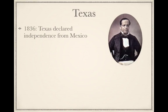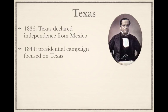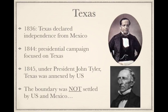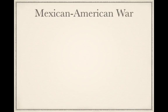Texas will break away from Mexico under Santa Ana's leadership. In 1836, Texas declared independence from Mexico, and in 1844, the U.S. presidential campaign focused on Texas. The Democrat James K. Polk was all about annexing Texas. Shortly before Polk became president, under the current president John Tyler, Texas was annexed by the United States. However, the boundary between the U.S. and Mexico was not settled, leading to conflicting claims over the Texas boundary, which helped lead to the Mexican-American War.